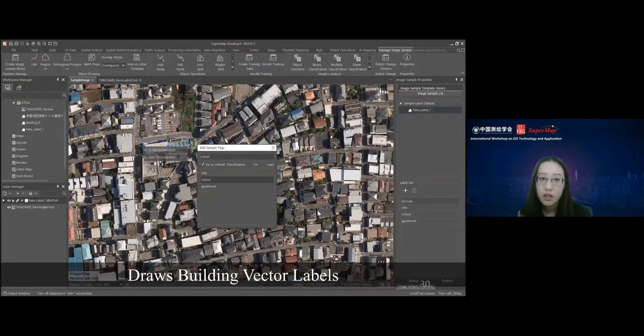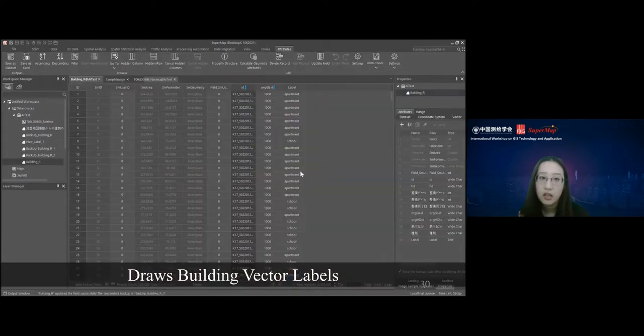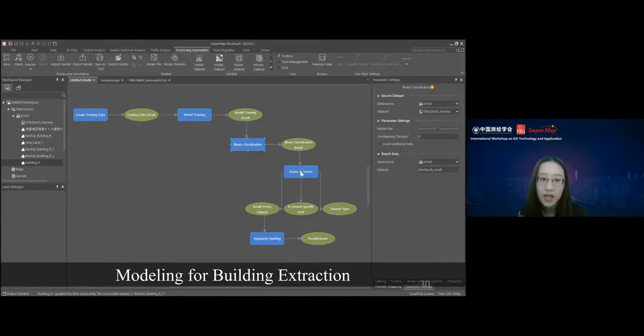These are the labels that we got, and this is the attribute table. You can see we have the label column at the last. After we have our labels, we can create training data. We do the model training, binary classification, and convert our result to vectors and regularize our buildings. This is the whole deployment workflow.